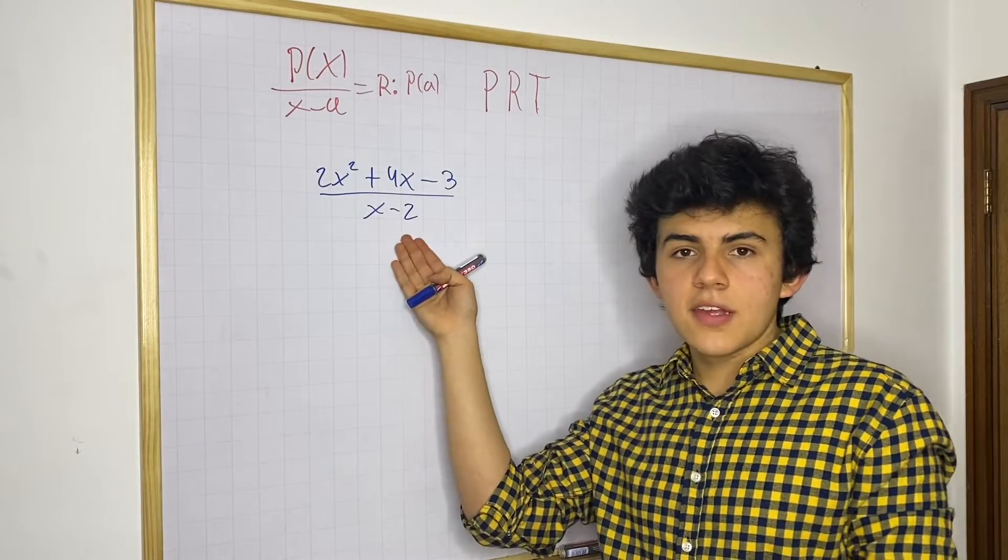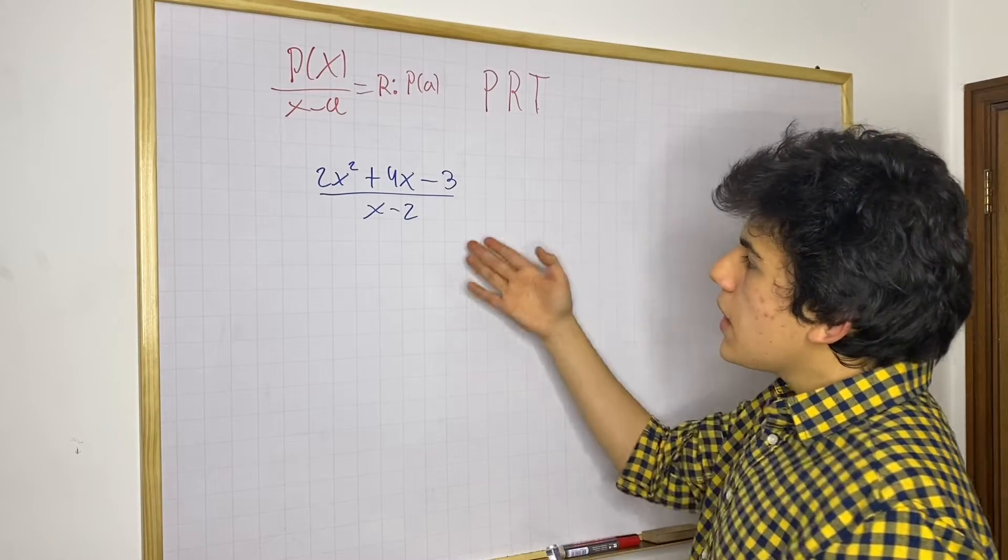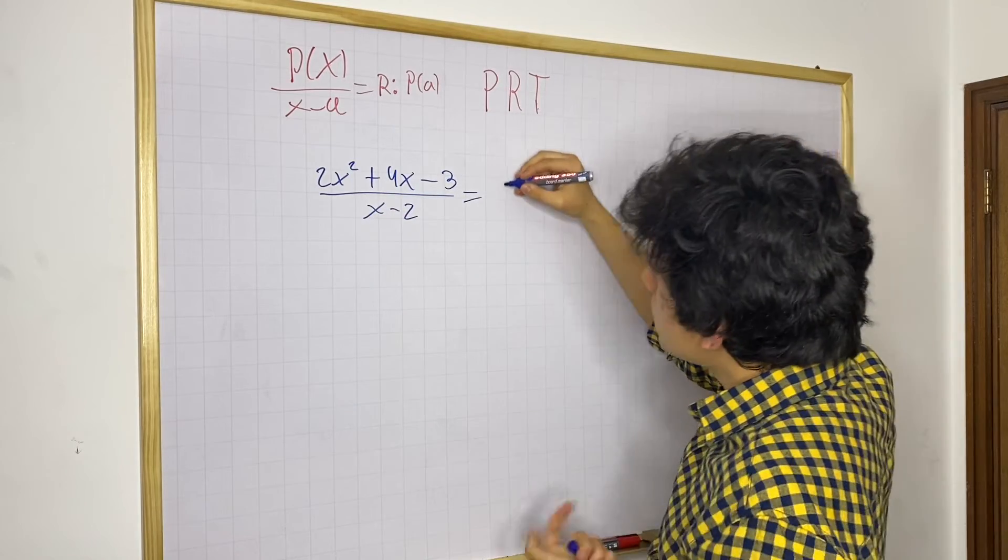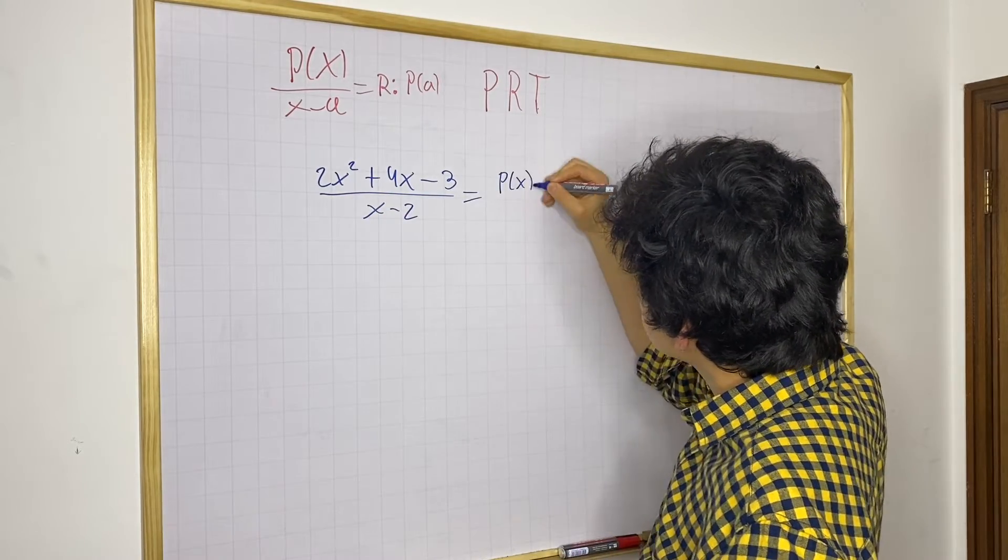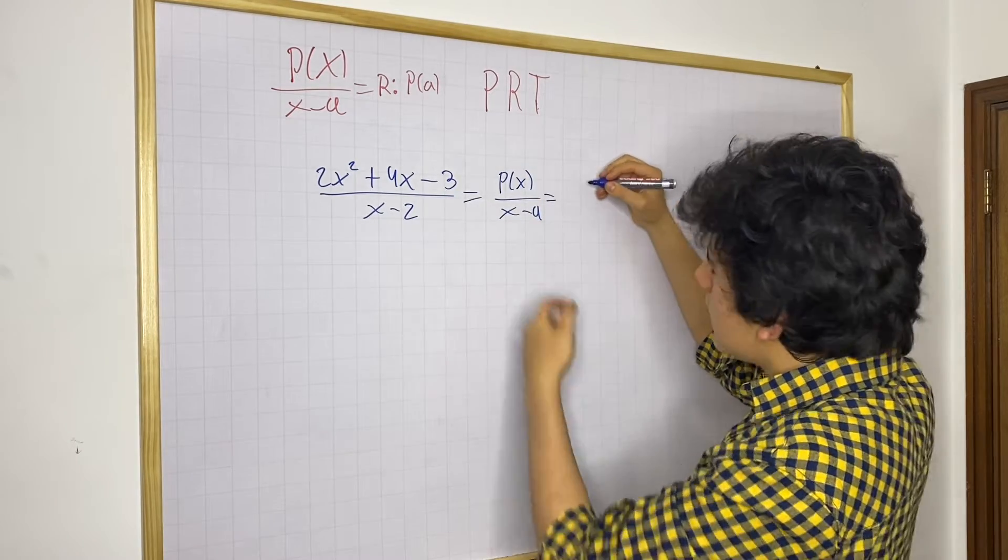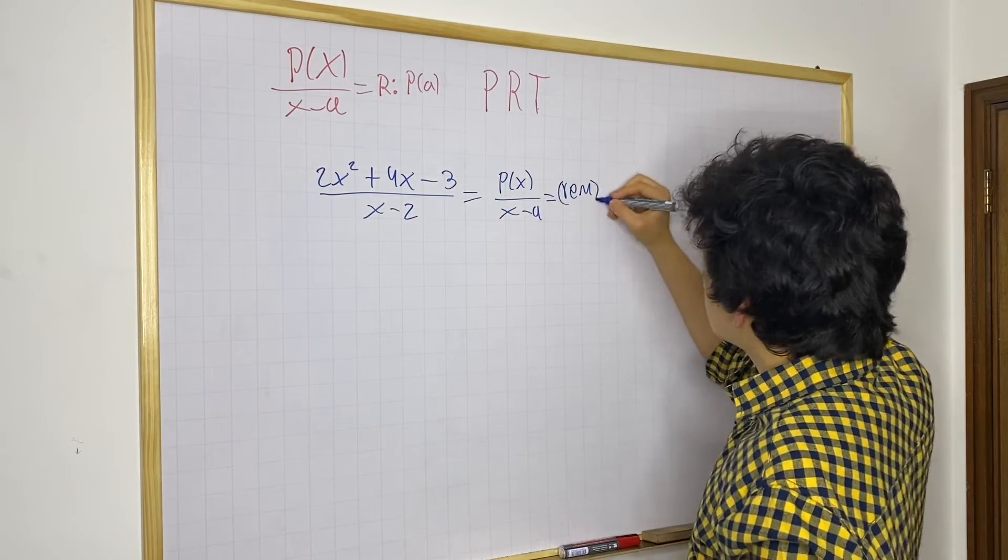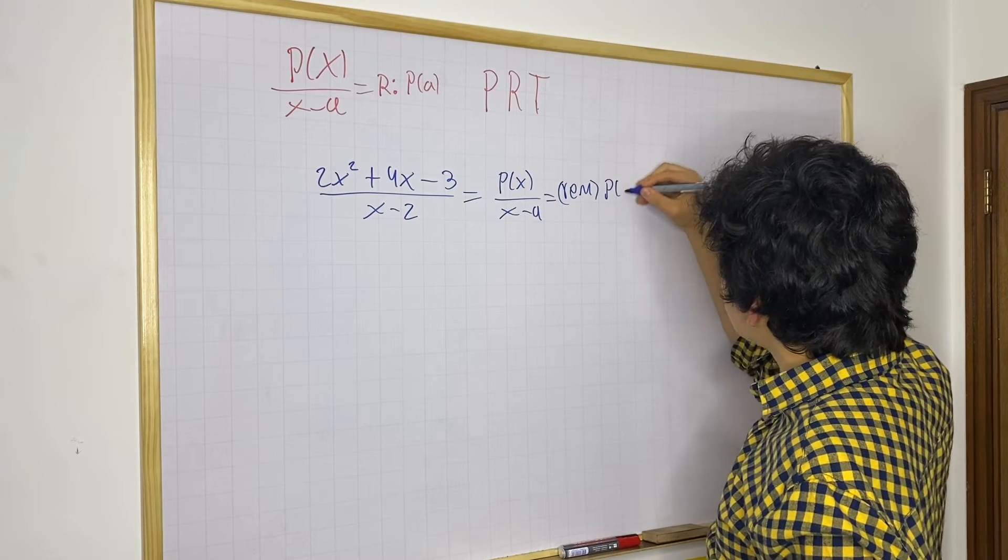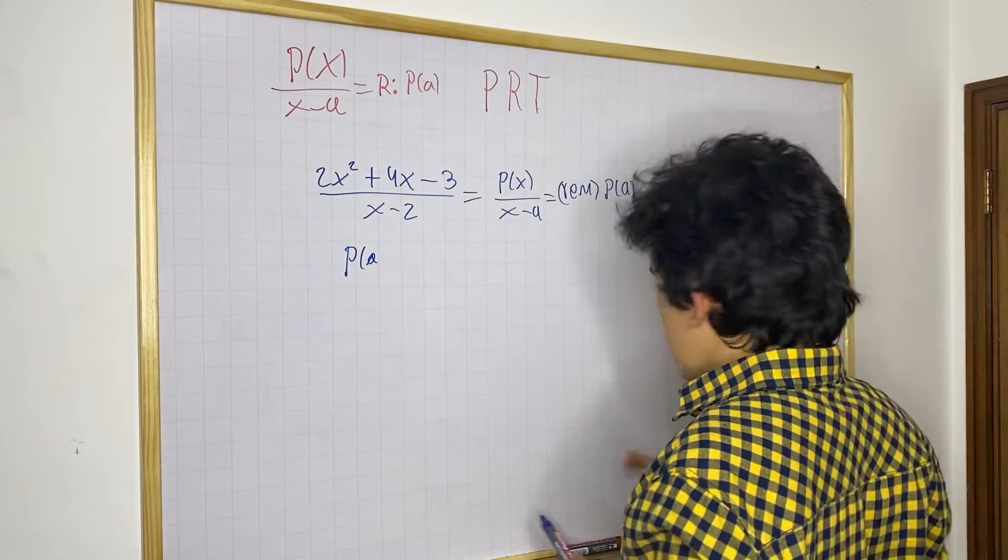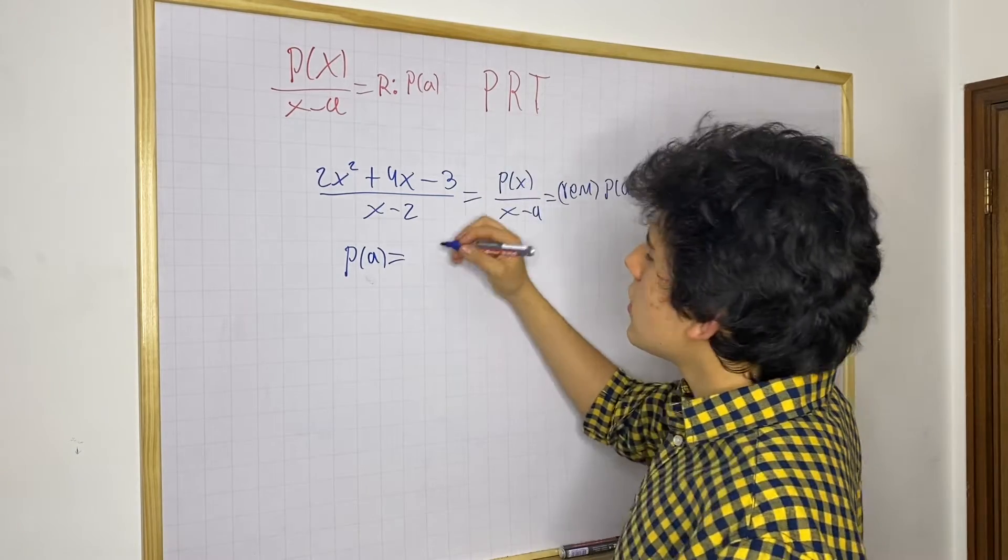So let's solve the example that we have here. Now, using the polynomial remainder theorem, we know that to find the remainder of this division, we can evaluate this polynomial, which I'm going to define as p of x, we can evaluate it at a, which in this case would be 2. So remainder, I'm just going to write REM, would be equal to p of a. And in this case, p of a would be equal to, so let's do it.